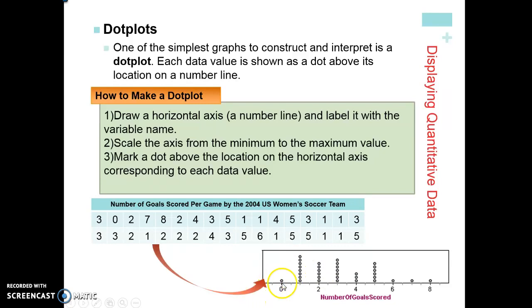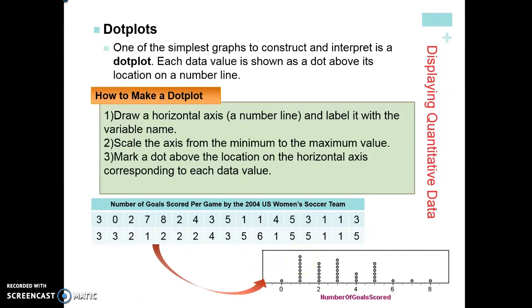It's very easy for us to see that there were zero goals scored in one game, six goals scored in another, but mostly was between one and three goals. It's very easy for us to see and I can take a look at each individual data point, which is kind of nice, and not necessarily all of the other graphs do that.